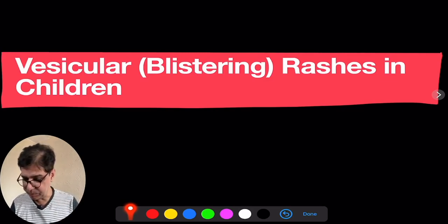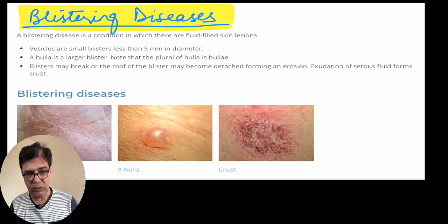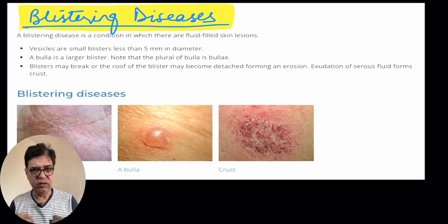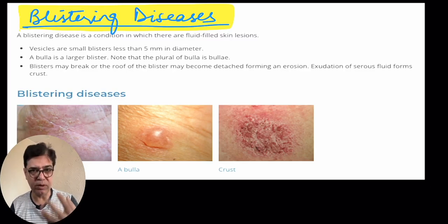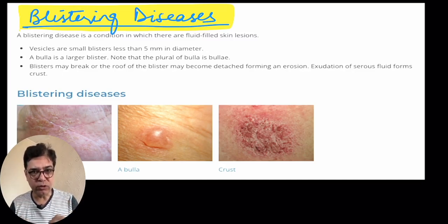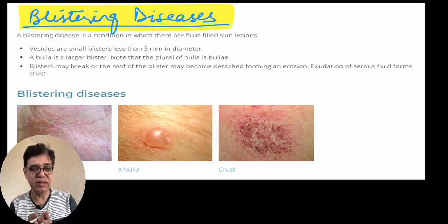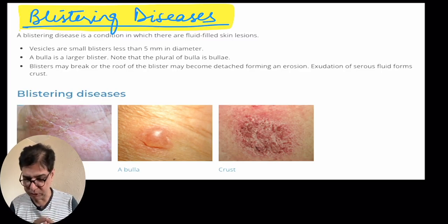First, what is a blistering rash or a vesicular rash? A blistering or vesicular rash is a condition in which the skin has fluid-filled lesions. There is a rash on the skin — it could be any part or multiple parts — but these areas are dotted with lesions filled with fluid. In most cases this fluid is clear, though it might look slightly turbid.